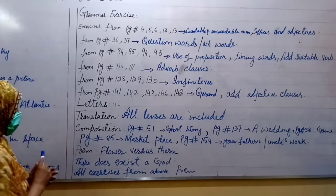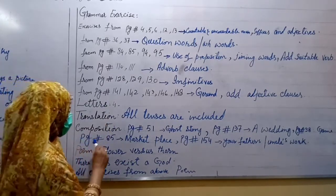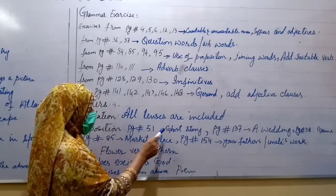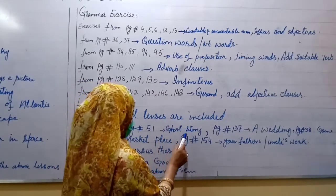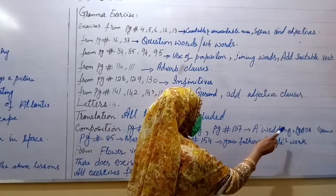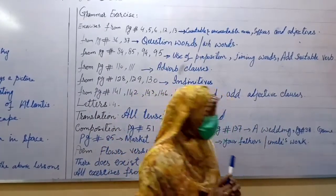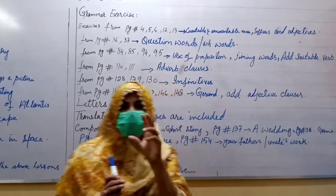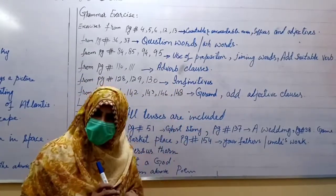Now, let's see composition. You have done composition from different pages. Page number 51 topic is ghost story. You have written a ghost story. Page number 137 A wedding. Page number 38 Game. Which game you like too much? So you have to write one paragraph about that game which do you like.